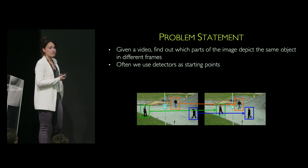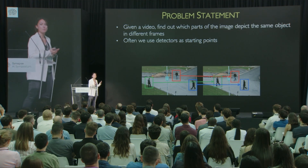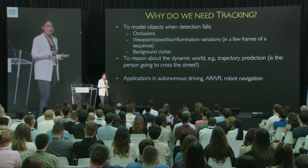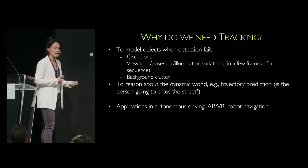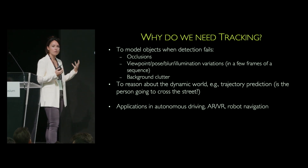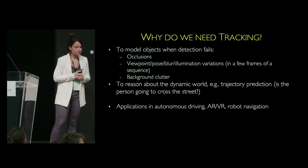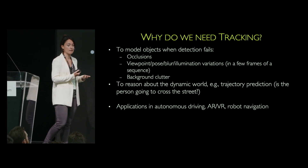We often use detectors as a starting point, and this is a recurrent theme of this talk — we're going to rely heavily on detectors, and this is something we want to get rid of. One might ask: why do we actually need tracking if we rely so much on detection? One goal of tracking is to actually help when detection fails, for example when we have occlusions. It's pretty common to have pedestrians occluding each other, or going behind a pole or a car, and we still want to reason about where these pedestrians are.